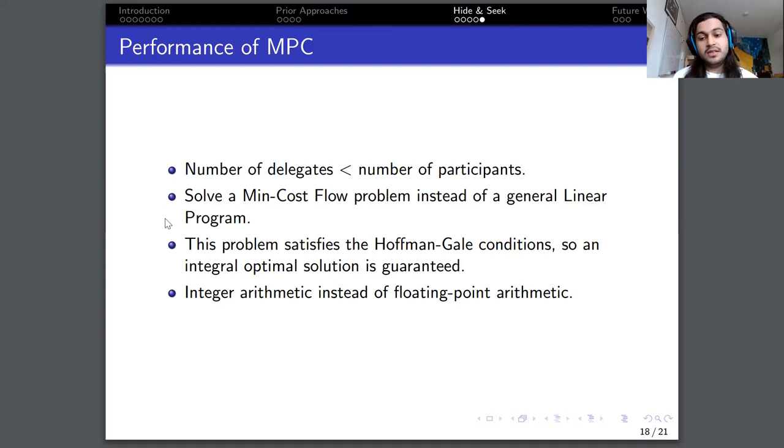But linear programs in general cannot be solved in linear time, or actually even it is an open problem to decide if there exists a strongly polynomial algorithm to solve linear programming in general. Moreover, our min-cost flow problem formulation of rebalancing satisfies the Hoffman-Gale conditions. And these conditions tell you when a certain optimization problem, a linear program or a min-cost flow problem has integer solutions. And so because it satisfies these conditions, we know that there will always be one optimum solution with integral coordinates, assuming, of course, that the capacities of all edges are integer. And this means that we can utilize integer arithmetic instead of floating-point arithmetic in our multi-party computation.